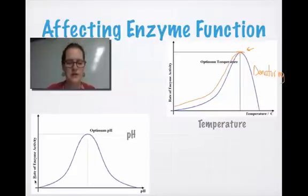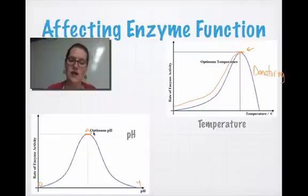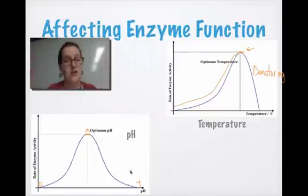pH is a little bit different. For a digestive enzyme, the optimum might be a pH of 2, like stomach juices. If you go too far in either direction, you start disrupting those hydrogen bonds. The enzyme falls apart, no longer fits its substrate, and stops working.